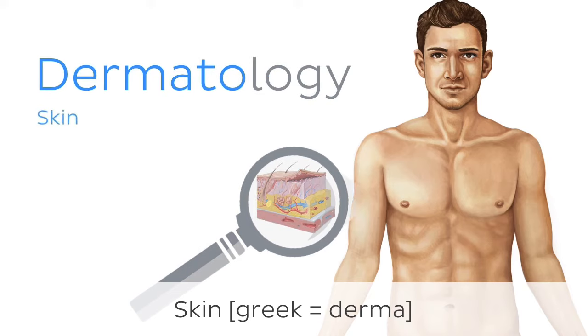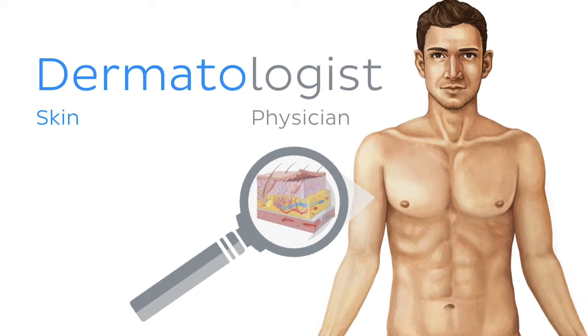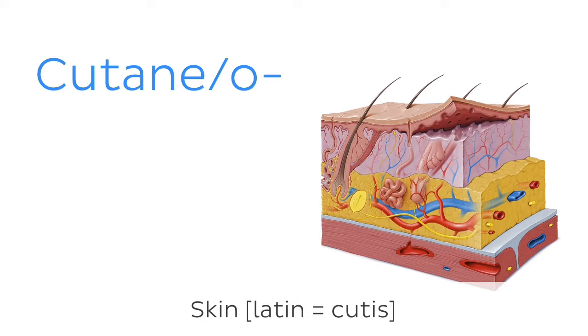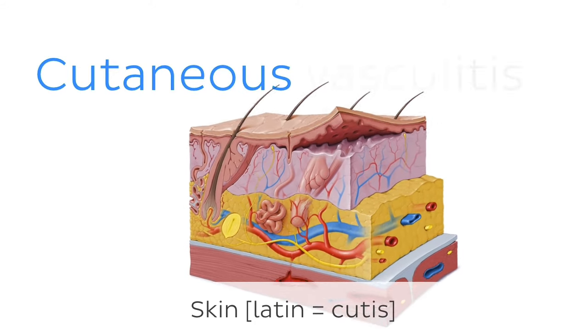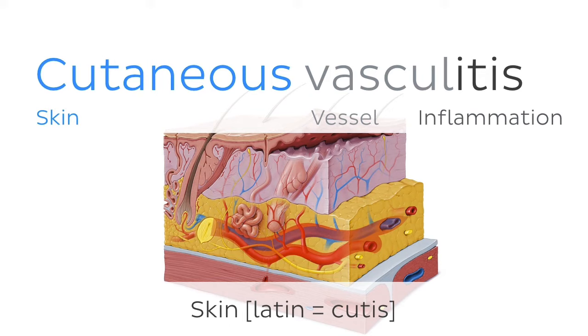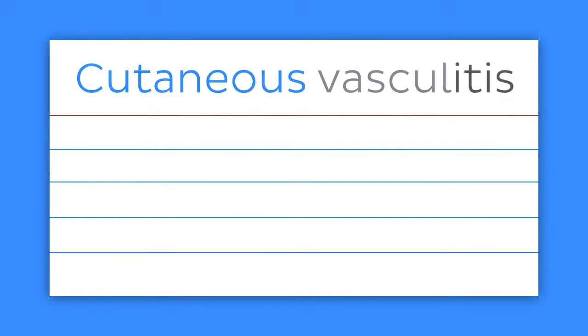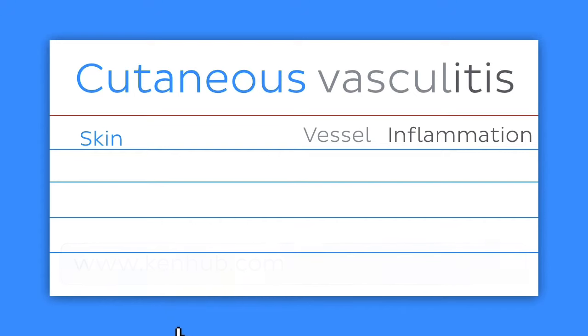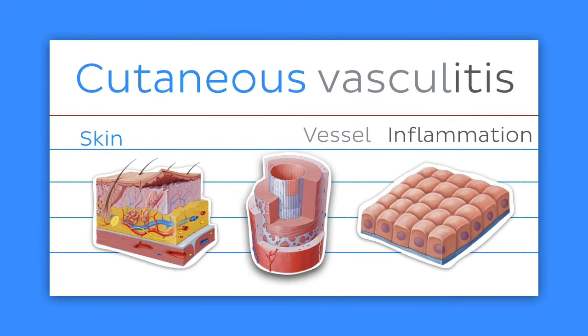Let's take a look at some common root words related to the skin, beginning with derm, dermo, or dermato, which comes from the Greek word derma meaning skin — as in dermatology or dermatologist. For many Greek root words we have a Latin equivalent; in this case cute, cutane, or cutaneo, both of which also refer to the skin, as seen in cutaneous vasculitis. You can reinforce your learning by making simple flashcards, adding word elements on the front and explanations on the back. Register for free with KenHub.com to add anatomical illustrations from their atlas.